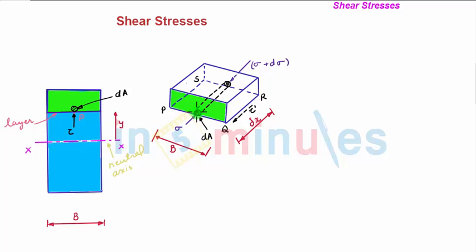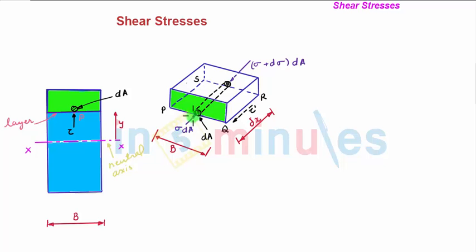Let sigma be the longitudinal stress on the small elemental area on this surface, whereas on the corresponding opposite surface the longitudinal stress is sigma plus d sigma, where d sigma is a variation of longitudinal stress. So the longitudinal force on this small elemental area will be sigma times dA, whereas the corresponding longitudinal force on the same elemental area on the opposite surface will be (sigma + d sigma) times dA.